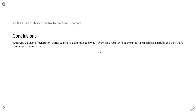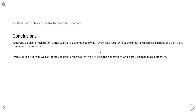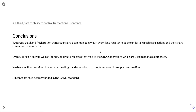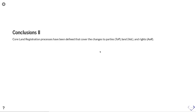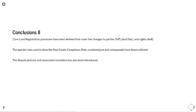In conclusion, we argue that land registration transactions are a common behaviour — every land register needs to undertake such transactions and they share common characteristics. By focusing on powers, we can identify abstract processes and map them to create, read, update, and delete operations used to manage databases. We've further described the foundational logic and operational concepts required to support automation, all grounded in the LADM standard. Core land registration processes have been defined covering changes to parties, land, and rights, and special rules for real estate complexes and leaseholds have been outlined. We've also looked at dispute processes and the freezing and unfreezing of property to determine potential blockers.